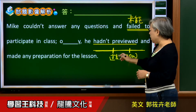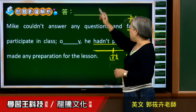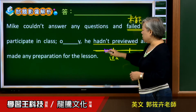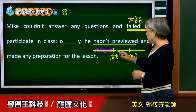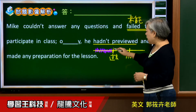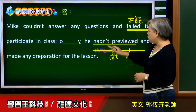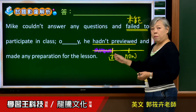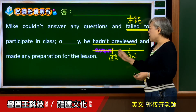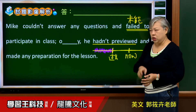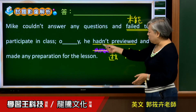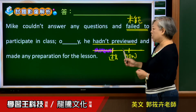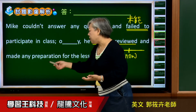他昨天没有认真地在上课回答任何问题，原因是因为他先前根本就没有先预习。所以这个动作是指在那之前，在过去之前的动作就要写過去完成式。他昨天为什么没有办法跟我们互动、没有办法回答任何问题？因为他之前没有先预习，所以要写过去完成式。明显地，他先前没有预习课程，and made any preparation。